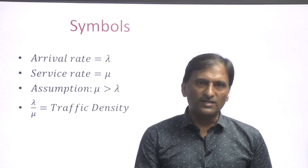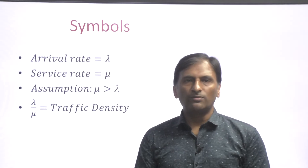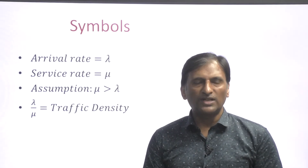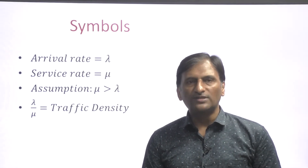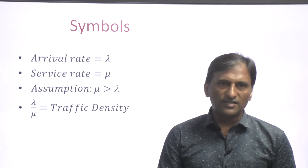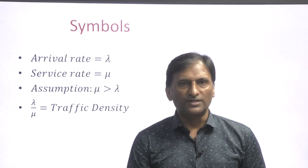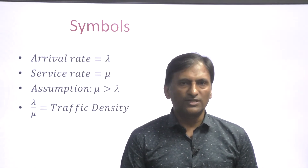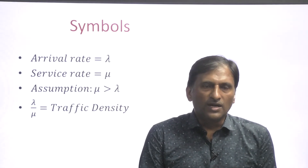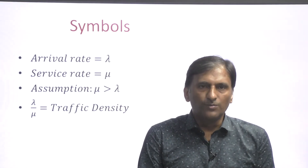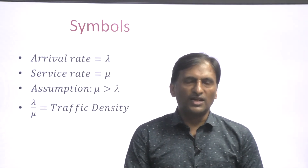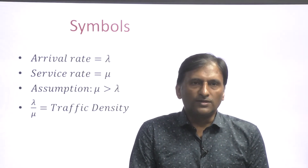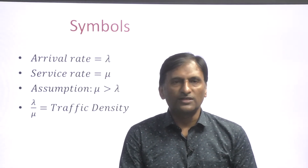In our syllabus, there is one particular model which we are going to discuss here. As a review from last session, in queuing models, two things are most important: the arrival rate — represented by the Greek small letter lambda — and the service rate — represented by the Greek small letter mu. Our assumption is that service rate is greater than arrival rate, so we can serve all units in the system. Lambda upon mu is known as the traffic density.